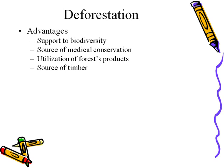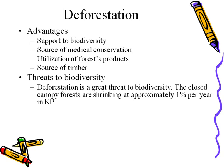Source of timber — today developed countries use timber for building houses. They use wood pulp, which is the material extracted from wood, and it is also used for making paper. Threats to biodiversity in Pakistan — deforestation is a great threat to biodiversity. The closed canopy forests are shrinking at approximately 1% per year in the province of KP.